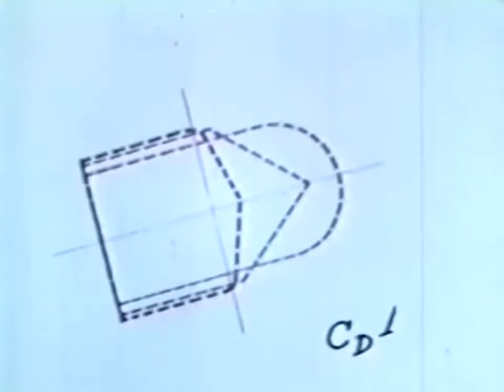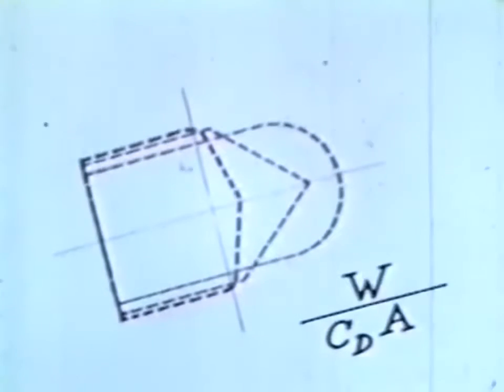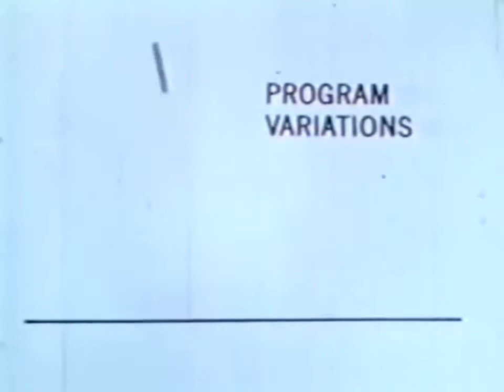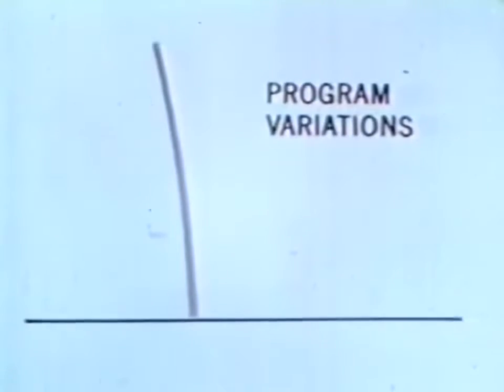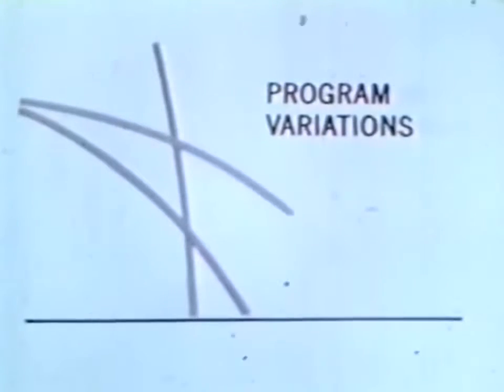First, on the design front, by modifying the vehicle's shape and size relative to its weight — in other words, its ballistic coefficient. And second, on the program front, by altering the vehicle's trajectory, its velocity, its attitude, and its angle of entry into the Earth's atmosphere.